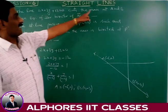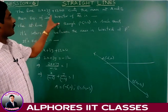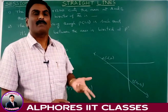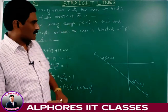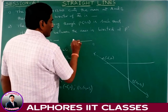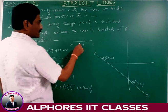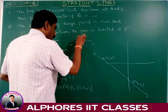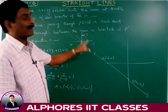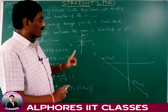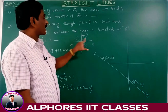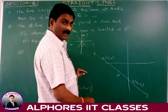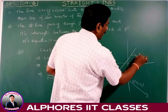The line cuts the coordinate axis at A(−6, 0) and B(0, −4). Perpendicular means the two lines make an angle of 90 degrees. Bisection means the line divides segment AB into two equal parts. The perpendicular bisector is the one line passing through the midpoint of AB that is also perpendicular to AB. So we need to find the midpoint of AB and determine the perpendicular line through it.